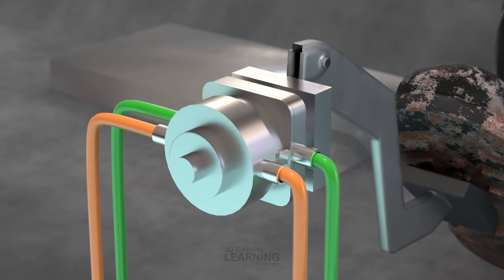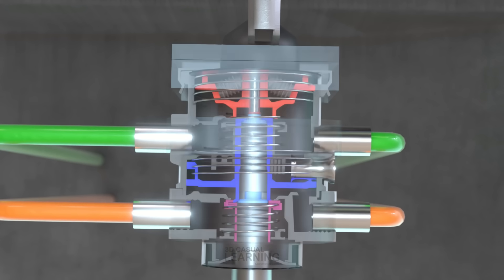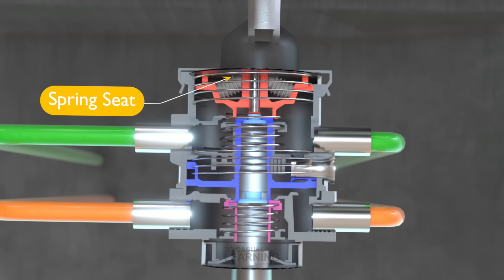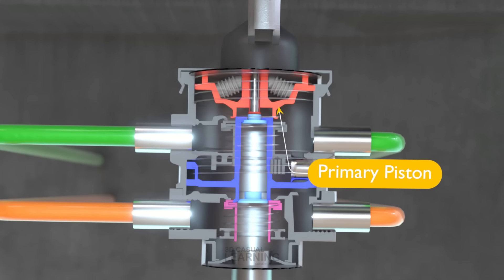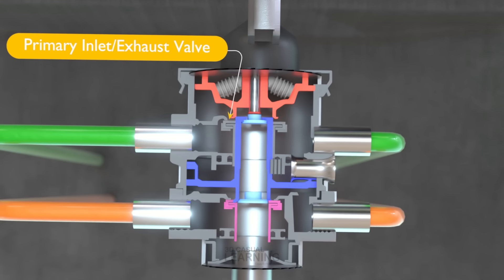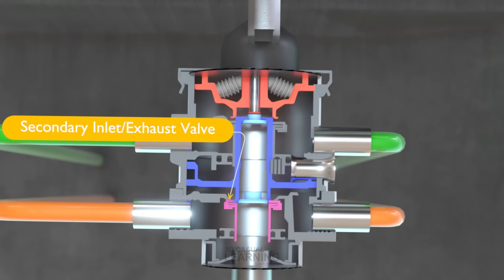Internally, the valve consists of several critical components. The spring seat. Graduating spring. Primary piston. Primary inlet and exhaust valves. Secondary piston. And secondary inlet and exhaust valves.